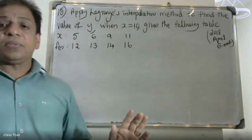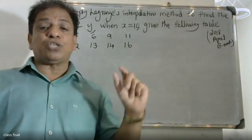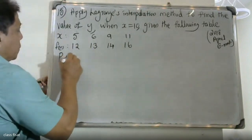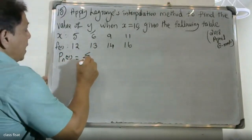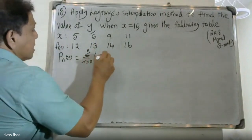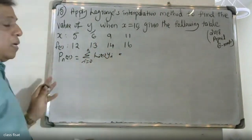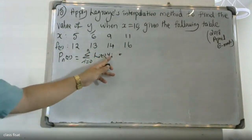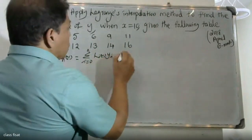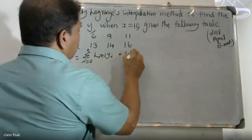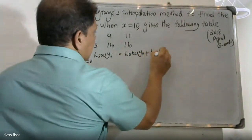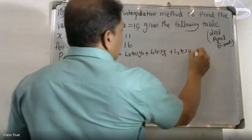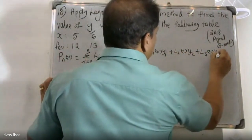The Lagrange interpolation formula is equal to sigma i equal to 0 to n, L_i(x) · y_i. Here i is the row number: L0(x)·y0 + L1(x)·y1 + L2(x)·y2 + L3(x)·y3, and so on.